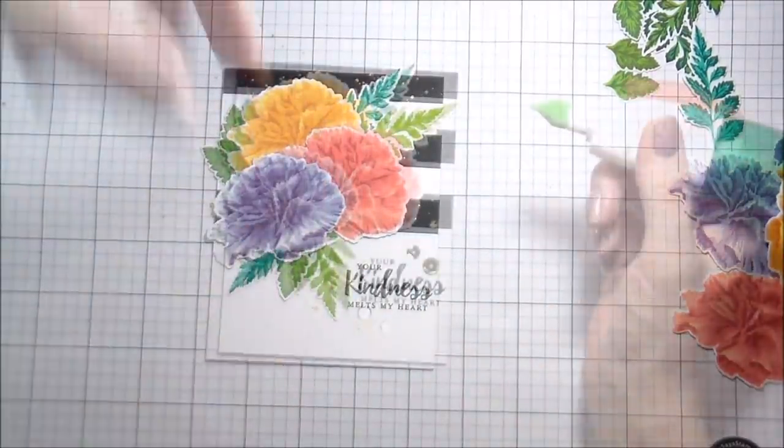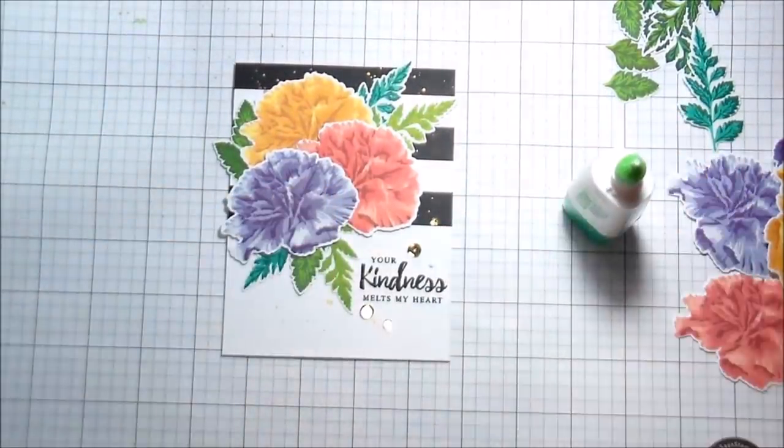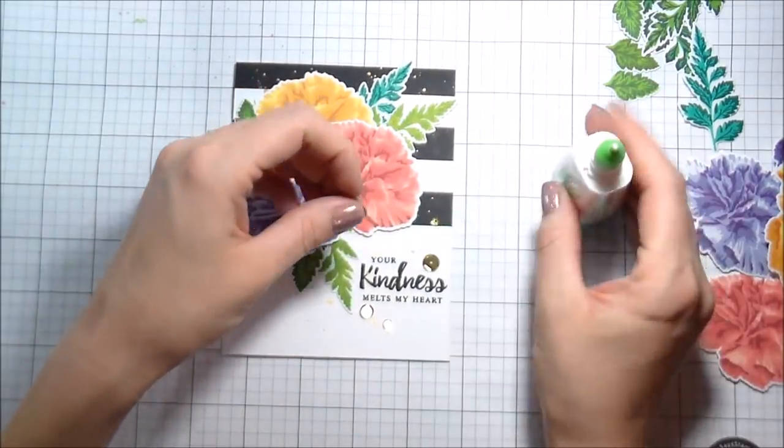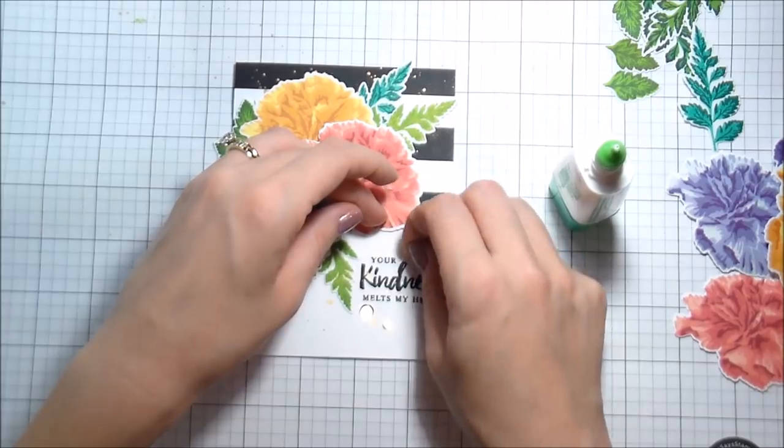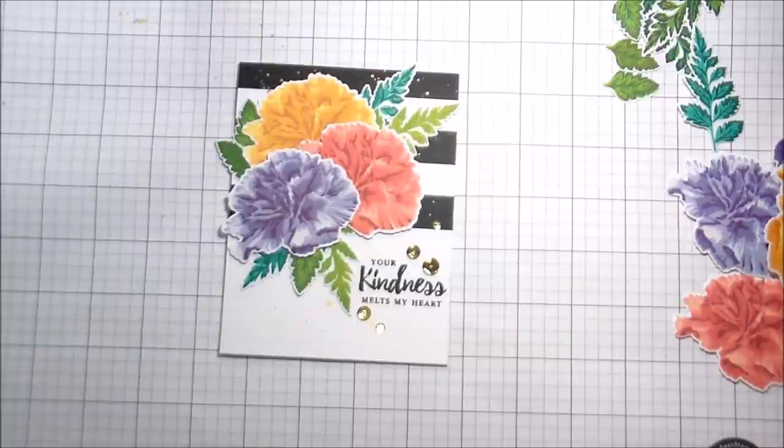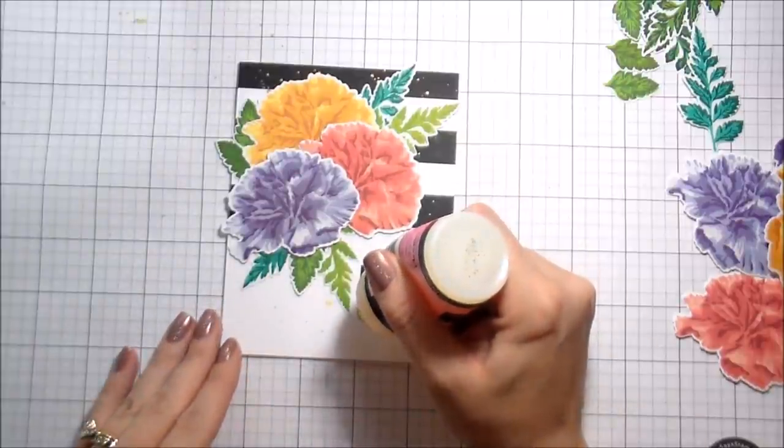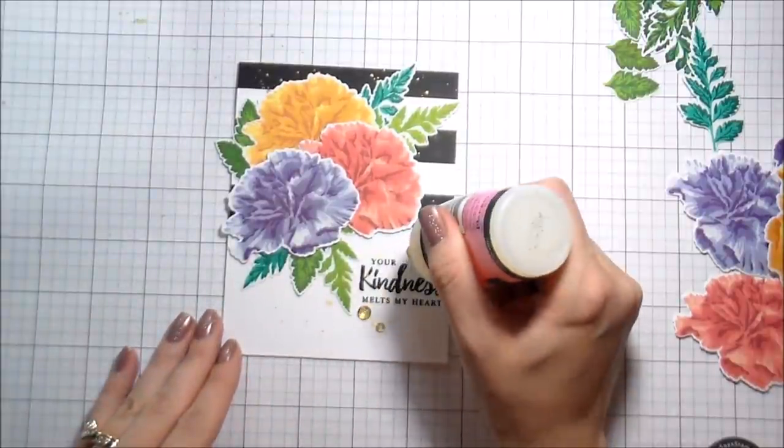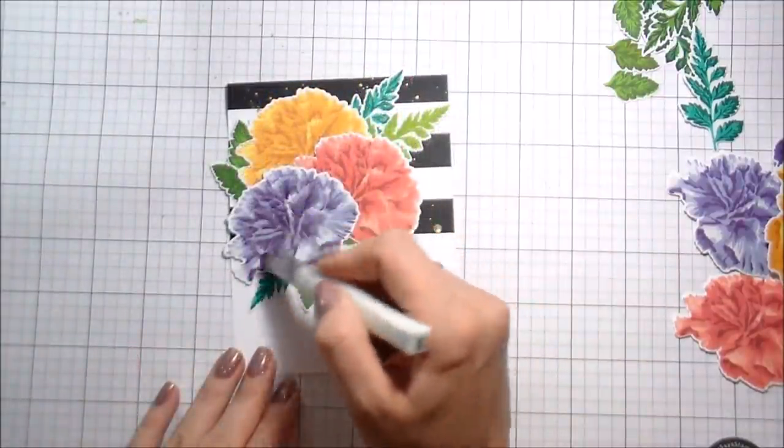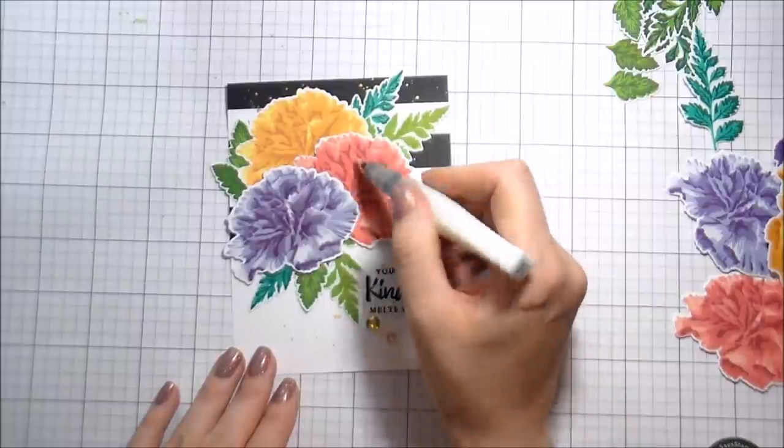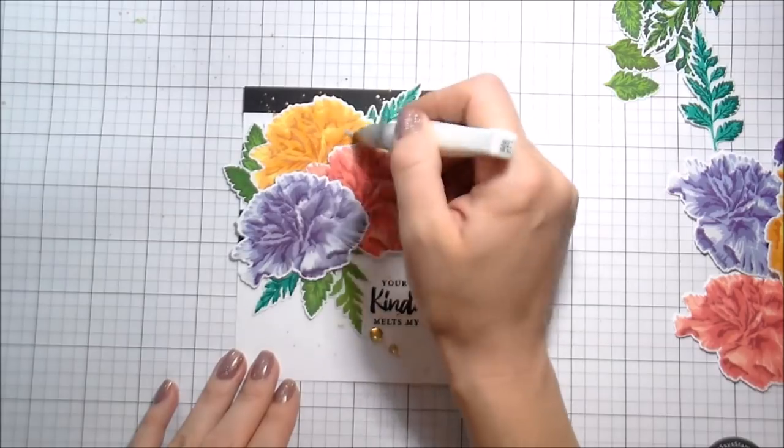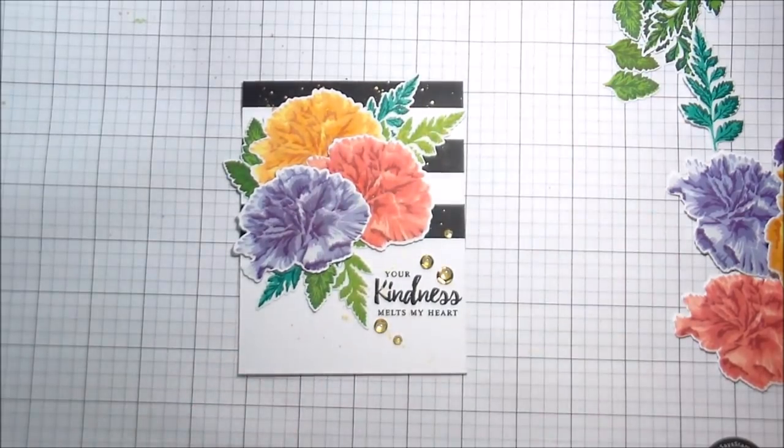That pretty much completes my little flower arrangement there. I've got my gold leaves. In order to bring in that gold just one more time, I'm going to use some gold sequins. They're big enough that I could adhere them just with my fingers, no problem. And then to make sure that they stay through the mail, I like to put just a drop of glossy accents into the cup of the sequin. I'm going to add just a little bit more shimmer with a clear Wink of Stella onto the center of my flowers. And then that is the whole card.